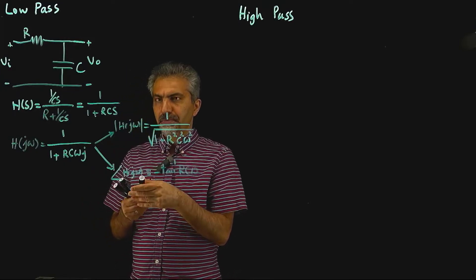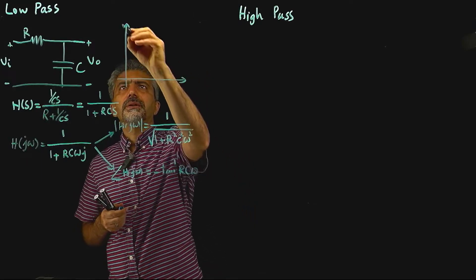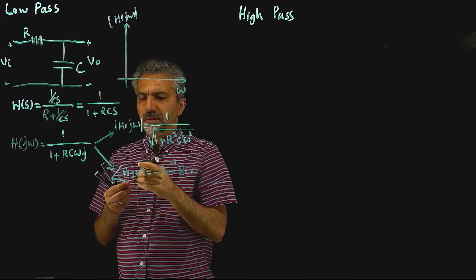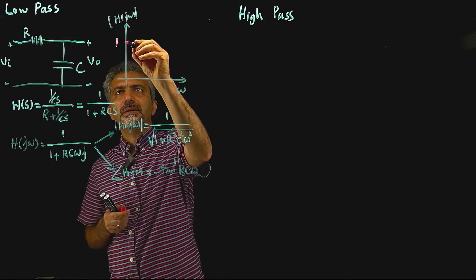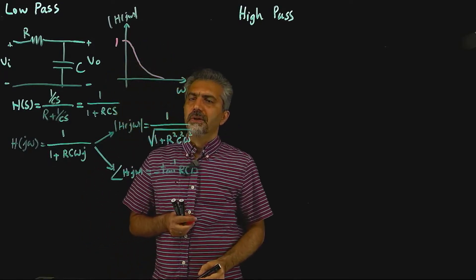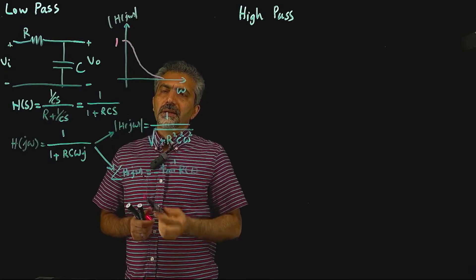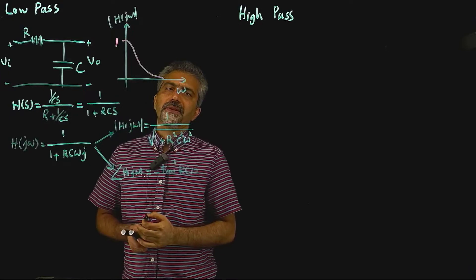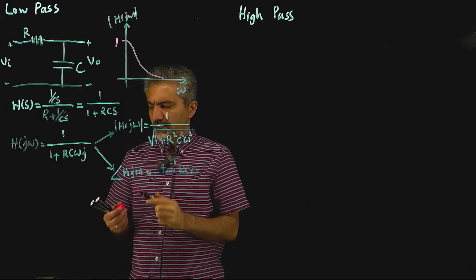If you plot the magnitude of H(jω) as a function of angular frequency, you're going to see 1 at ω = 0, and then this is going to go down quickly over higher frequencies. This is basically the characteristic that lets you call your circuit or filter a low-pass filter, for obvious reasons — low frequencies kind of pass, and then higher frequencies won't.